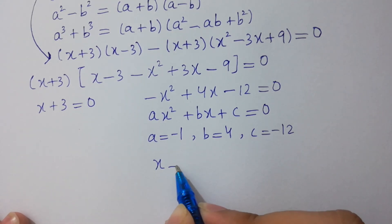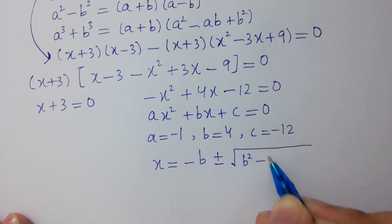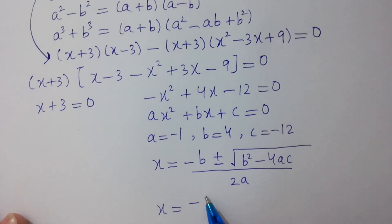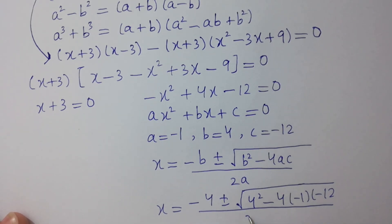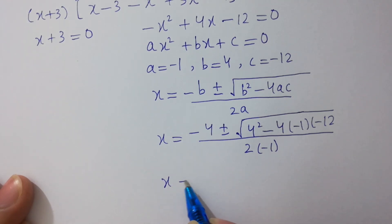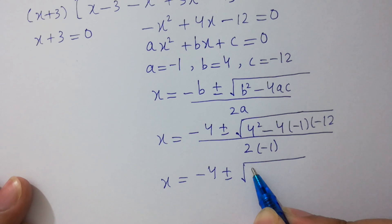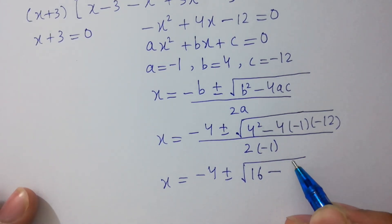x equals minus b plus or minus square root of (b squared minus 4ac), all over 2a. Substituting: x equals minus 4 plus or minus square root of (4 squared minus 4 times minus 1 times minus 12), over 2 times minus 1. Computing: x equals minus 4 plus or minus square root of (16 minus 48), over minus 2.